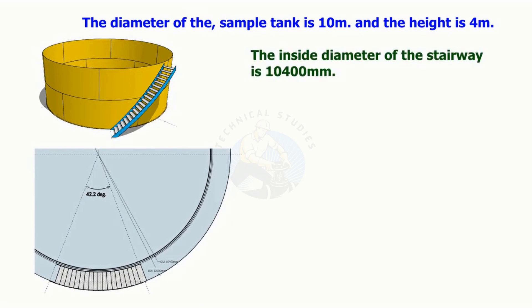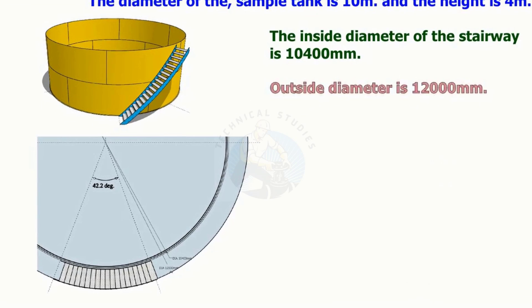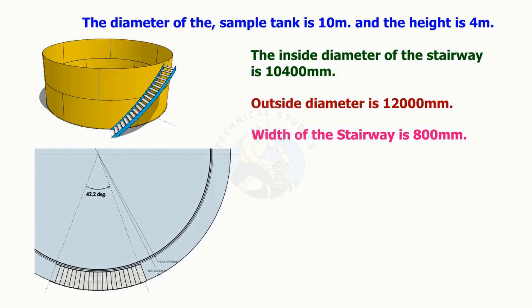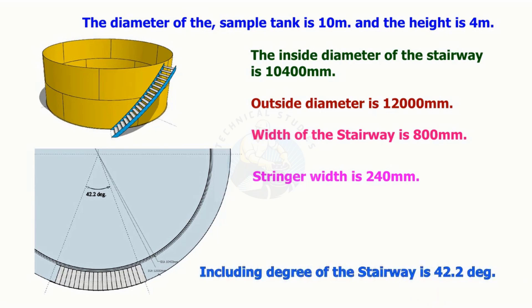The inside diameter of the stairway is 10,400 millimeters and the outer diameter is 12,000 millimeters. Width of the stairway is 800 millimeters. Stringer width is 240 millimeters. Including angle of the stairway is 42.2 degrees.